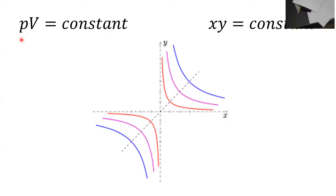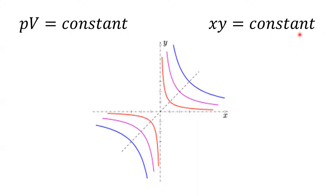Let's compare the equation PV equals constant to the more familiar XY equals constant. If you were to solve for Y, suppose the constant was the number one. Wouldn't that equation say Y equals one over X? Most of you know that Y equals one over X is an inverse relationship — and what you may not have known is that curve is in fact a hyperbola.